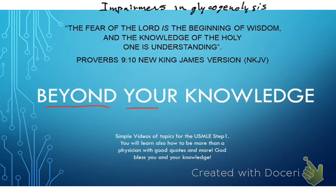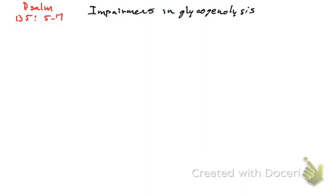Hi everyone, welcome back to Beyond Your Knowledge. We're going to be talking today about impairments in glycogenolysis. Before we continue, I would like to share Psalm 135:5-7: 'For I know that the Lord is great, and that our Lord is above all gods. Whatever the Lord pleases, he does in heaven and on earth, in the seas and all deeps. He makes the clouds rise at the end of the earth, makes lightnings for the rain, and brings forth the wind from his storehouses.' Amen.